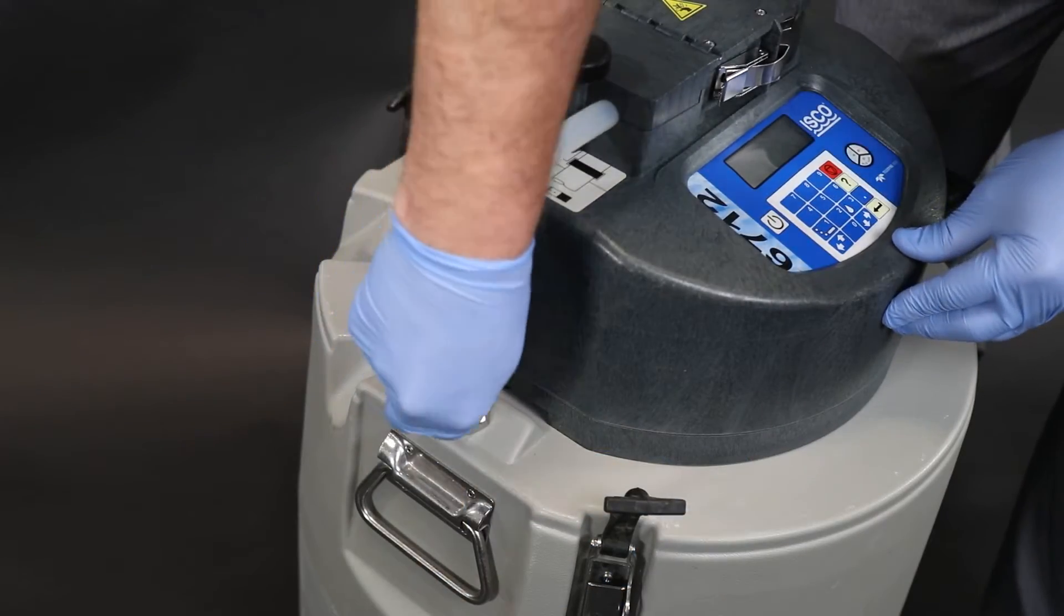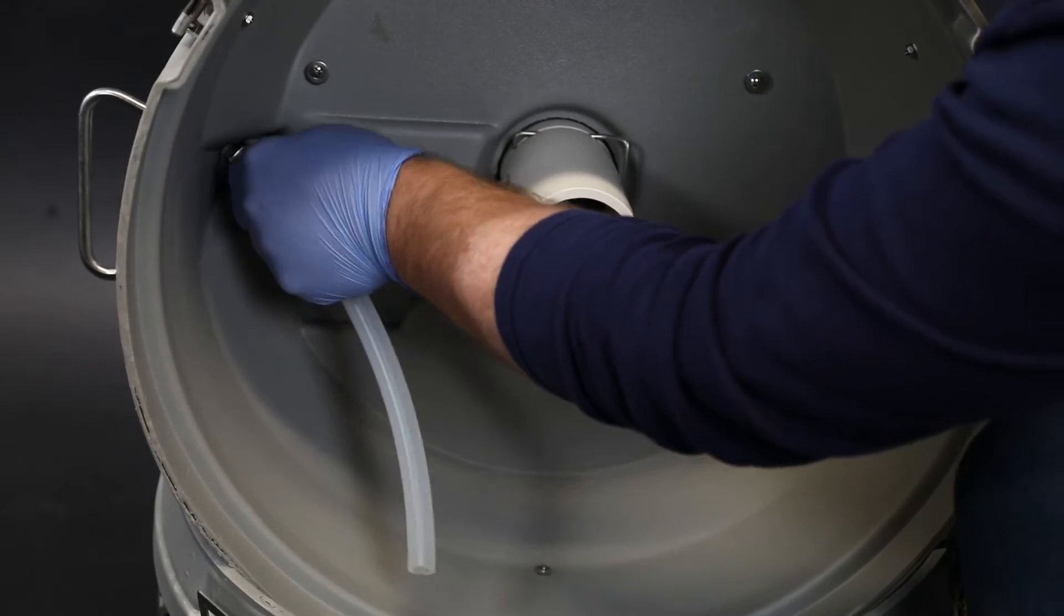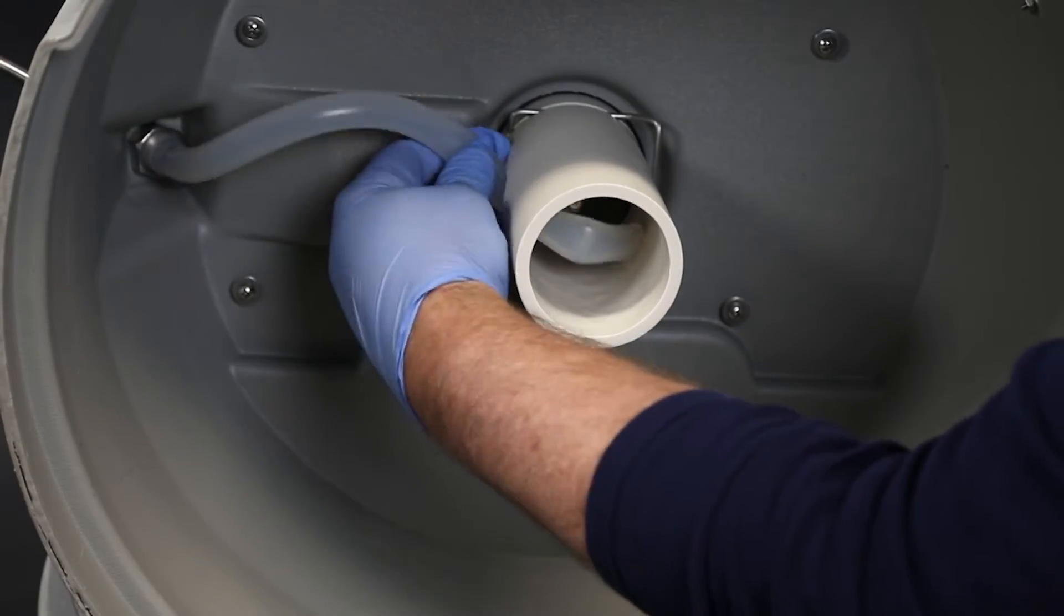Attach the long end of the pump tubing to the sampler. Inside the sampler, connect the discharge tube. Run the tube through the hole in the pipe and out the bottom.